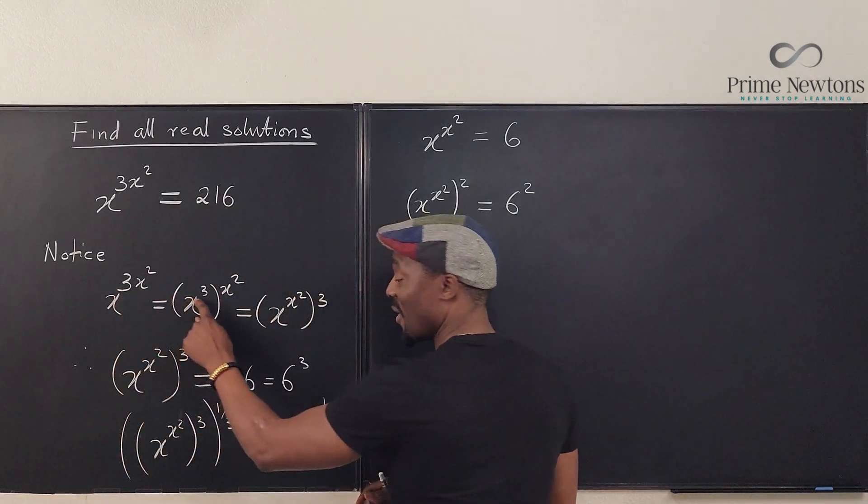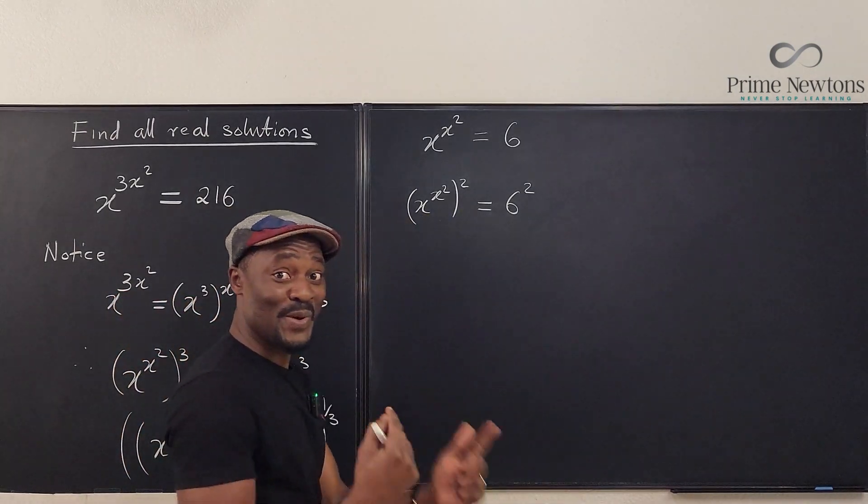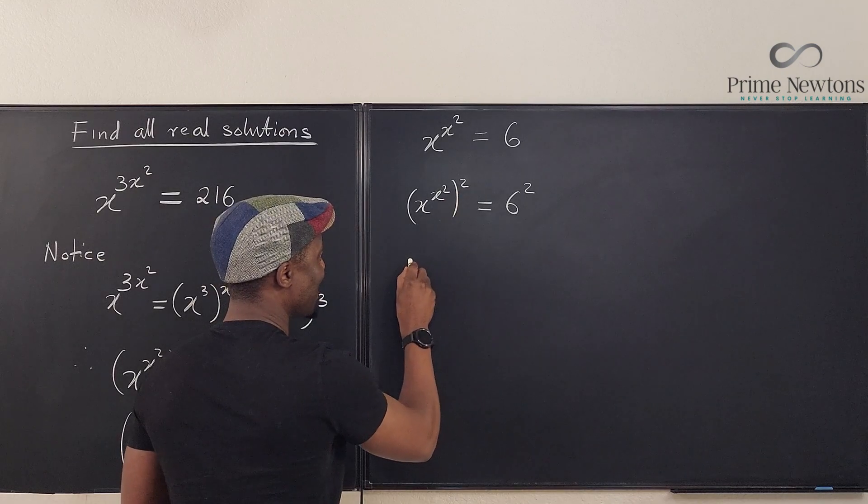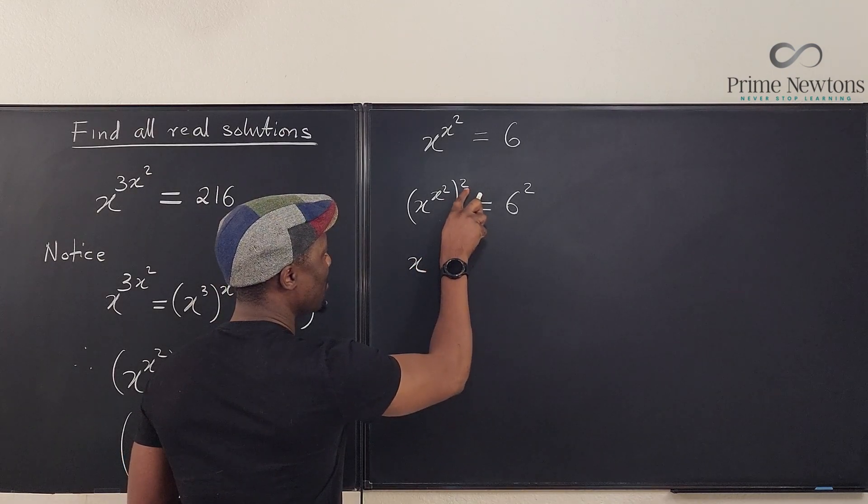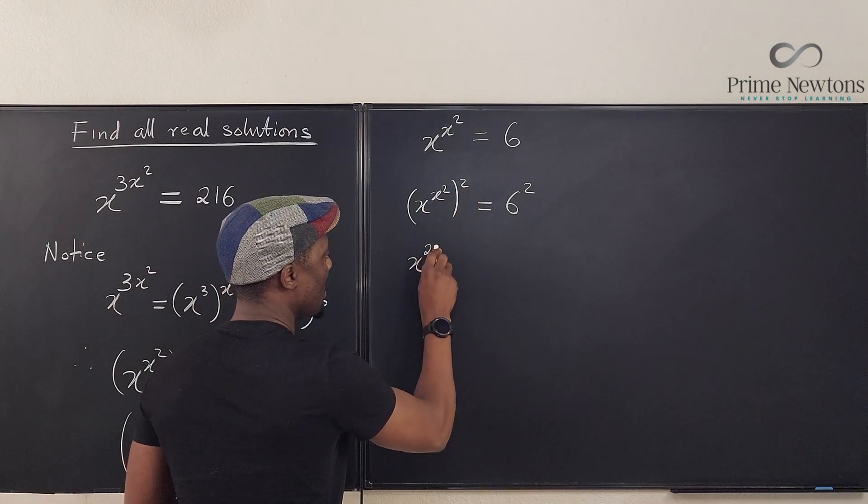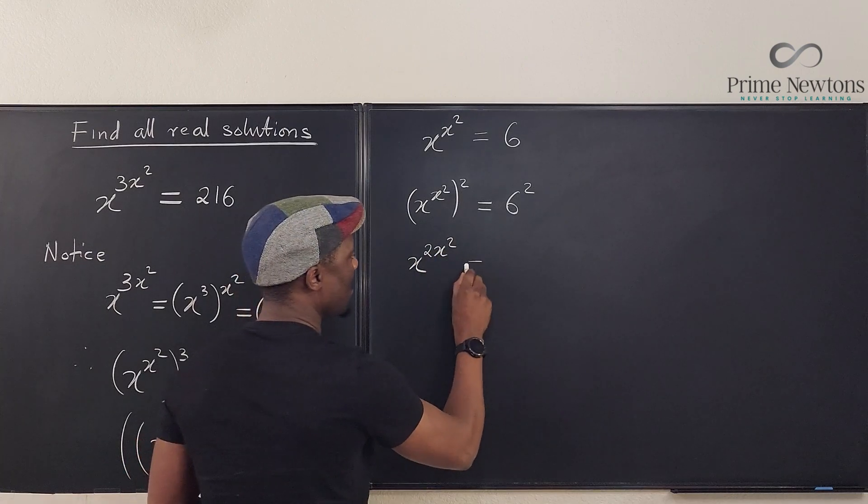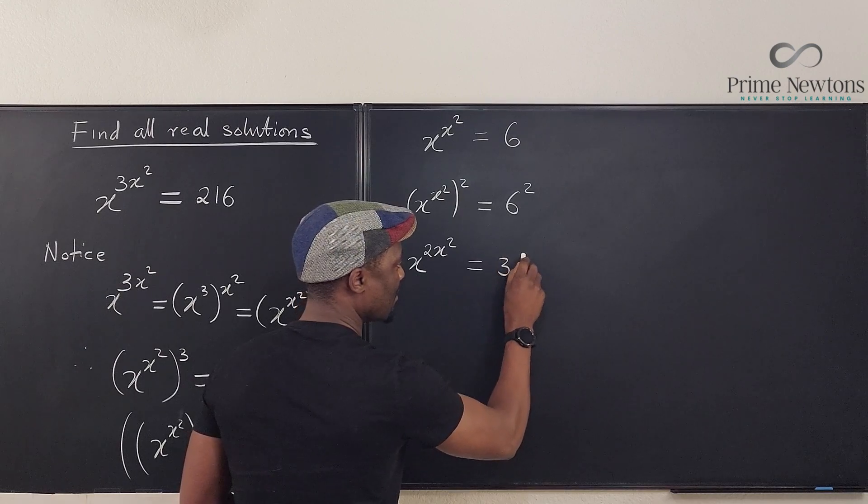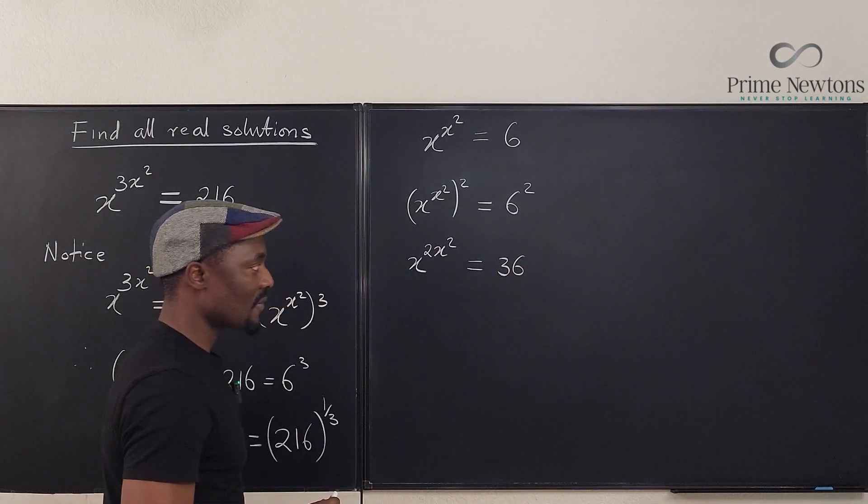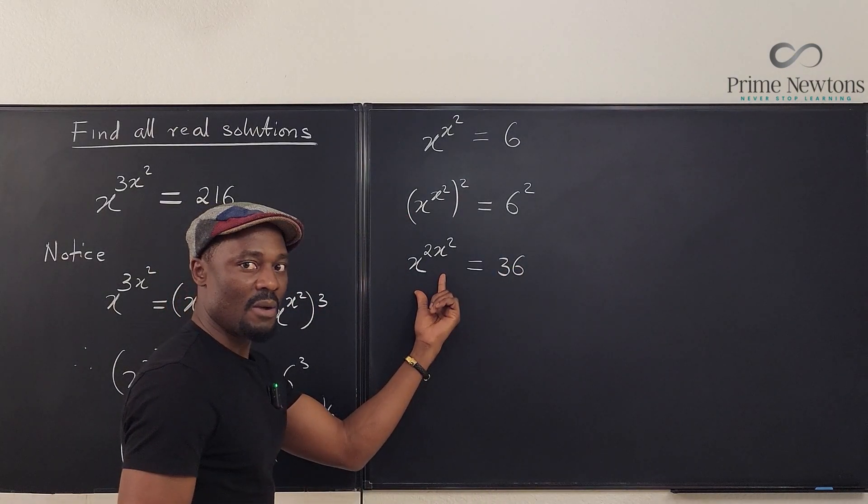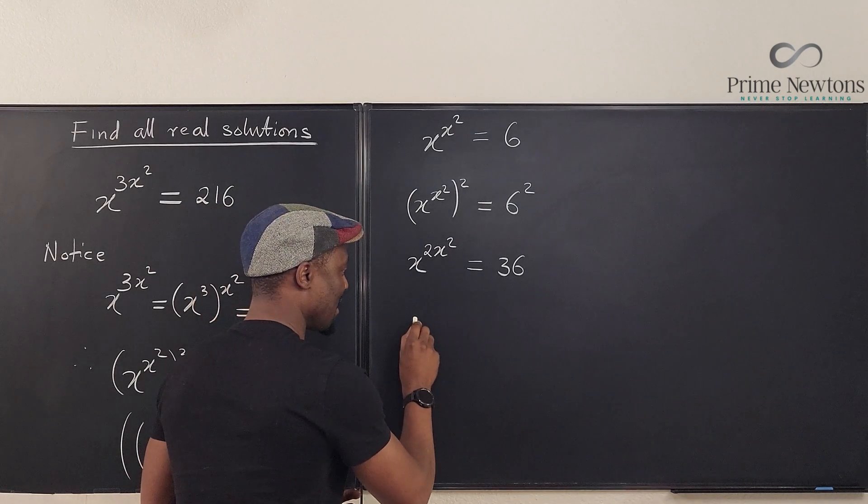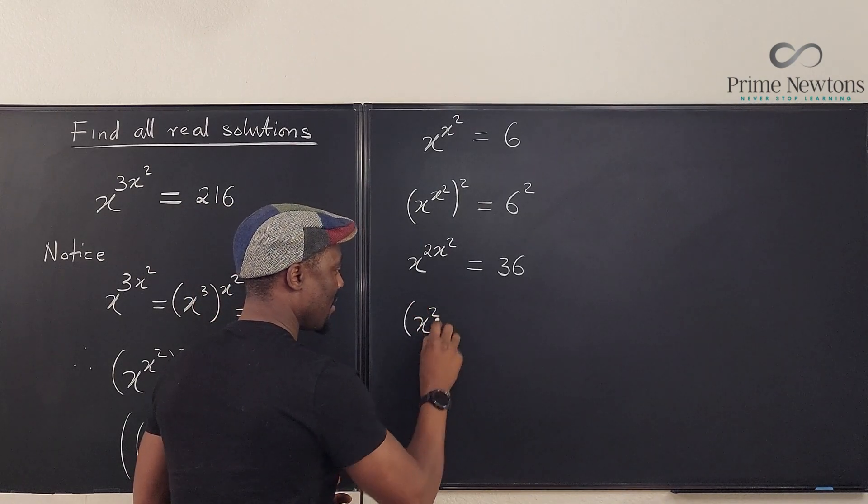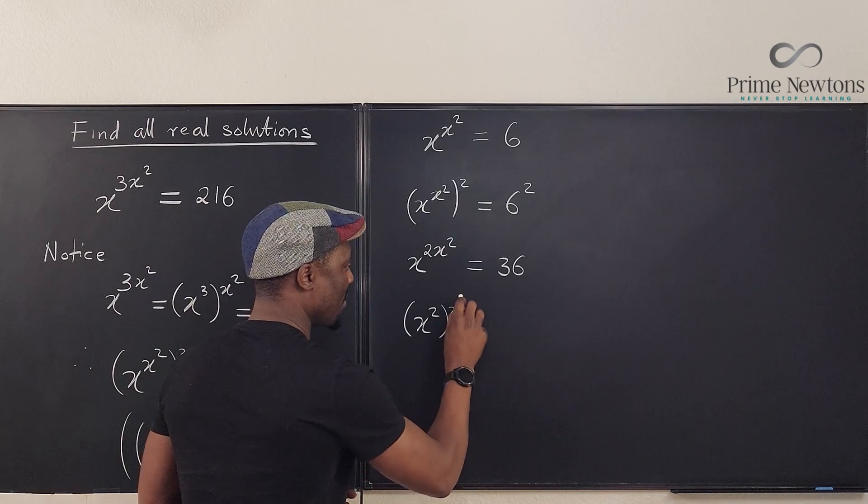Then I can raise this to power 2 and see what happens. Remember what I did here, what I undid here, and now I'm going to do it. So I'm going to rewrite this as x raised to power, or multiply this by this. You're going to get 2x² equals, this is going to be 6², which is 36. Now I'm going to separate this and write it as x² raised to power x².